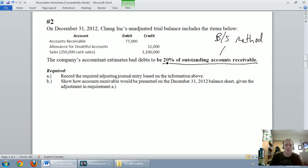Okay, let's do our adjusting journal entry. Well, again, if they give you this number, 20% of outstanding accounts receivable, we should figure out what that is. 20% times our accounts receivable, $77,000, is $15,400.